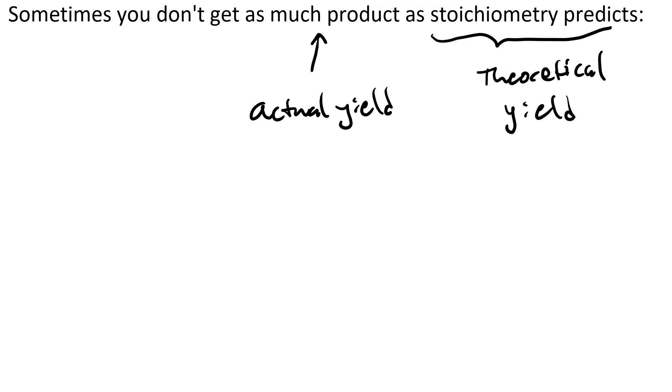Now, there are multiple reasons for this, but this is always true. Actual yield is less than the theoretical yield. Let's use the abbreviations AY and TY. So, AY is always less than TY.